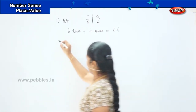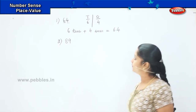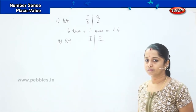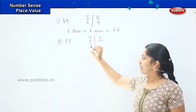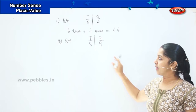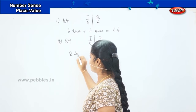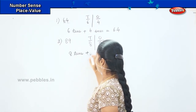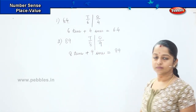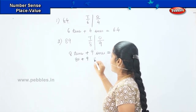Shall we do the next sum? Your next sum is eighty-nine. The first step: T and O. What number will come in T? Eight. What will come in O? Nine. How can you write it in the expanded form? It is eight tens plus nine ones equals to eighty-nine. Eight tens denotes eighty plus nine ones denotes nine, so eighty plus nine equals to eighty-nine.